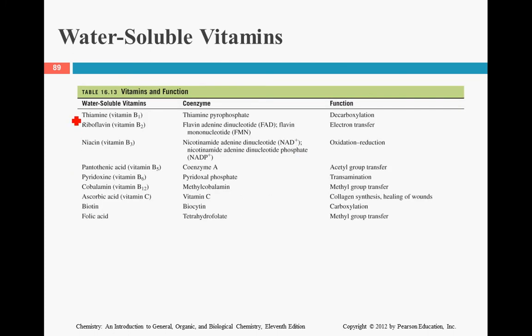These are some examples of water-soluble vitamins. They bond to the enzyme creating a coenzyme — the metals were just cofactors, but the vitamins are coenzymes and/or cofactors. They help the enzyme do its job, the function it is supposed to be doing.